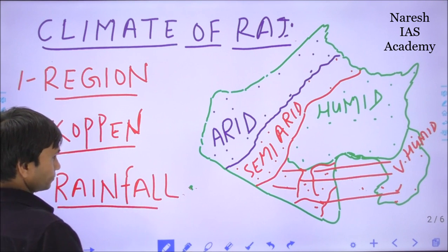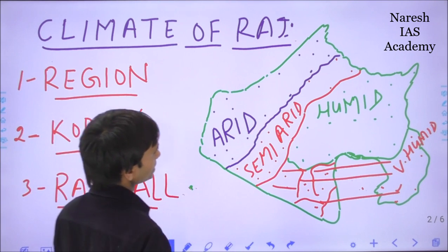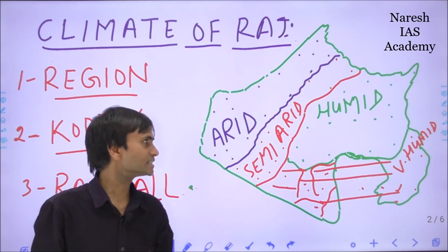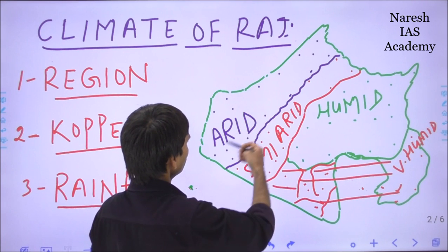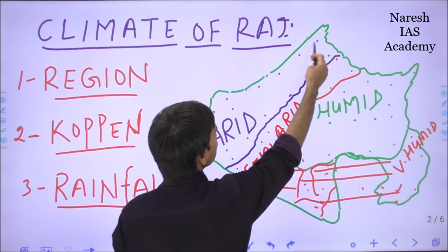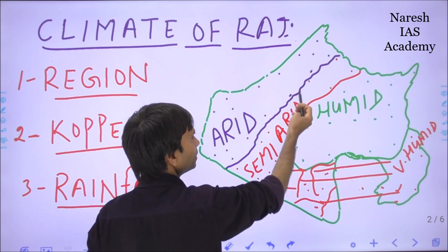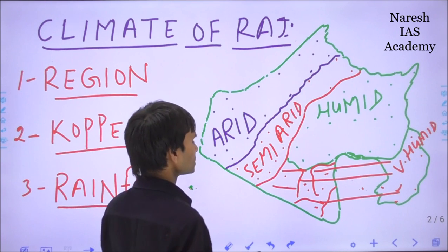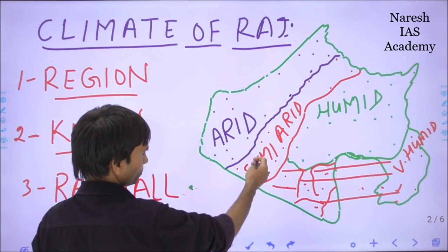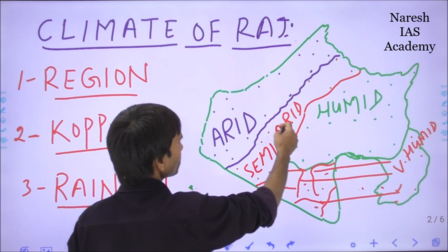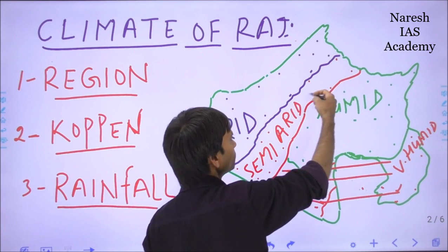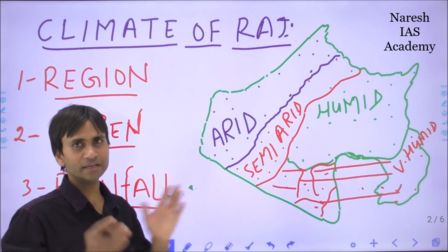The semi-arid region covers most of the Aravalli mountain range. The arid region includes Barmer, Jaisalmer, Jodhpur, Bikaner, Ganganagar, and Hanumangarh districts, and the western part of Nagaur district. The semi-arid region covers parts of Jalore, Sirohi, Pali, Nagaur, Churu, Sikar, and Jhunjhunu. Most of these parts are covered under the semi-arid region, where climatic conditions are not too extreme.